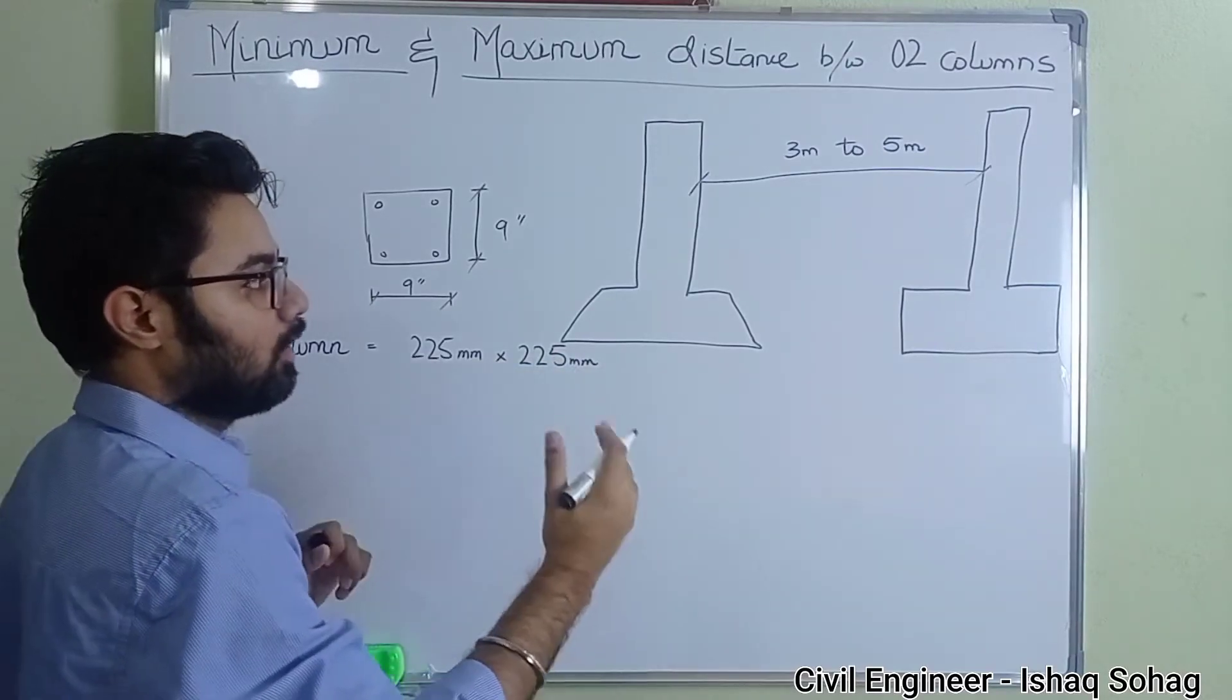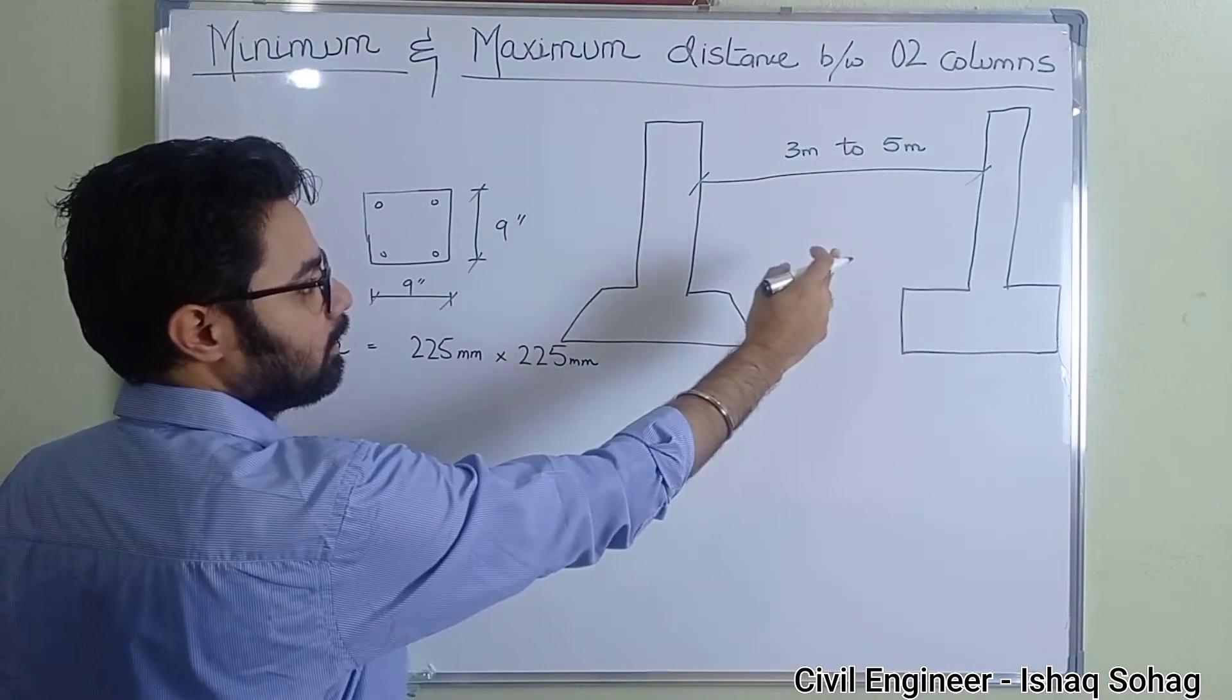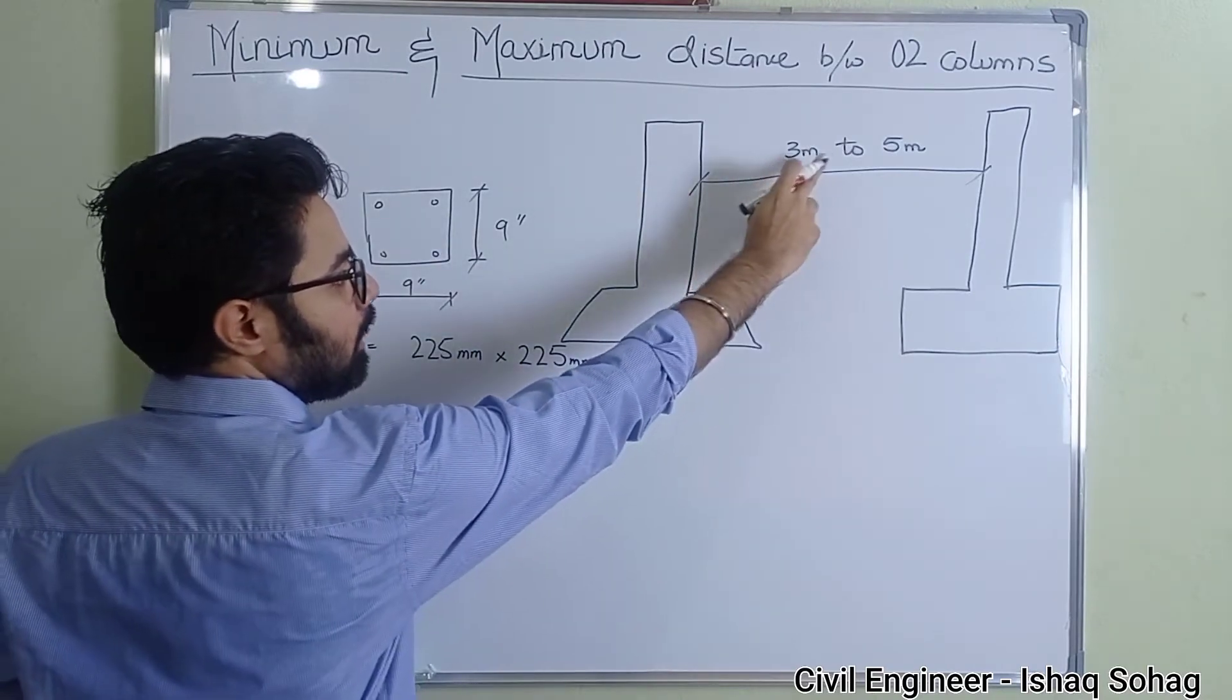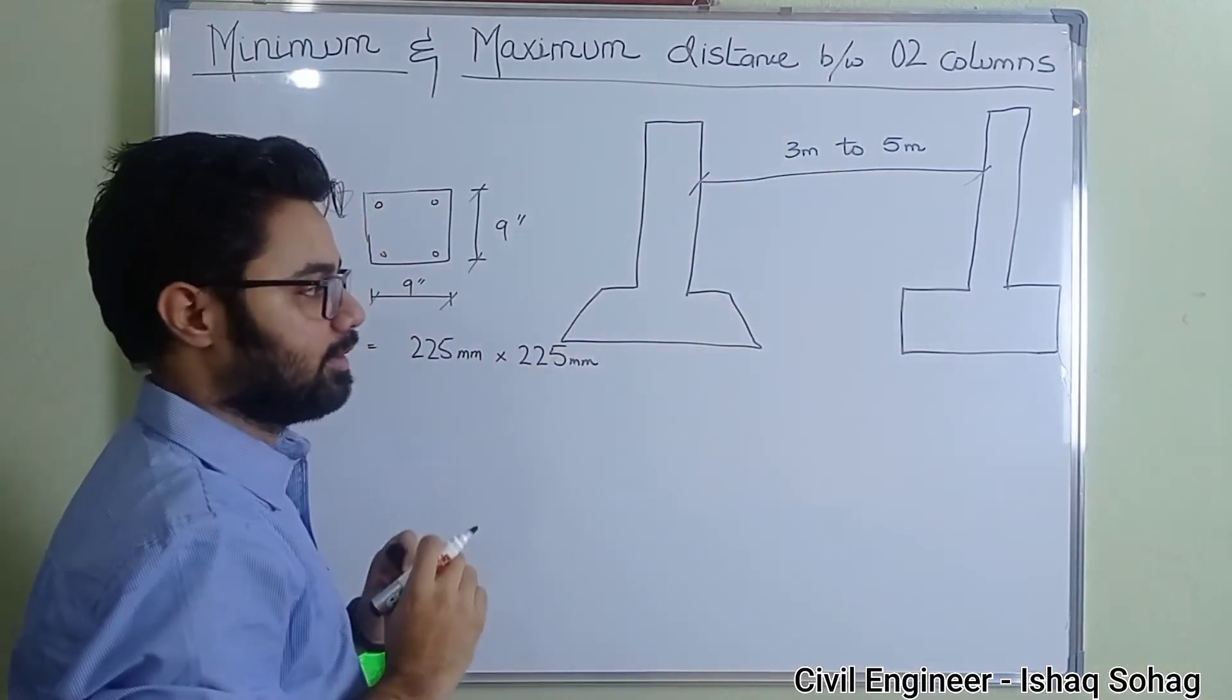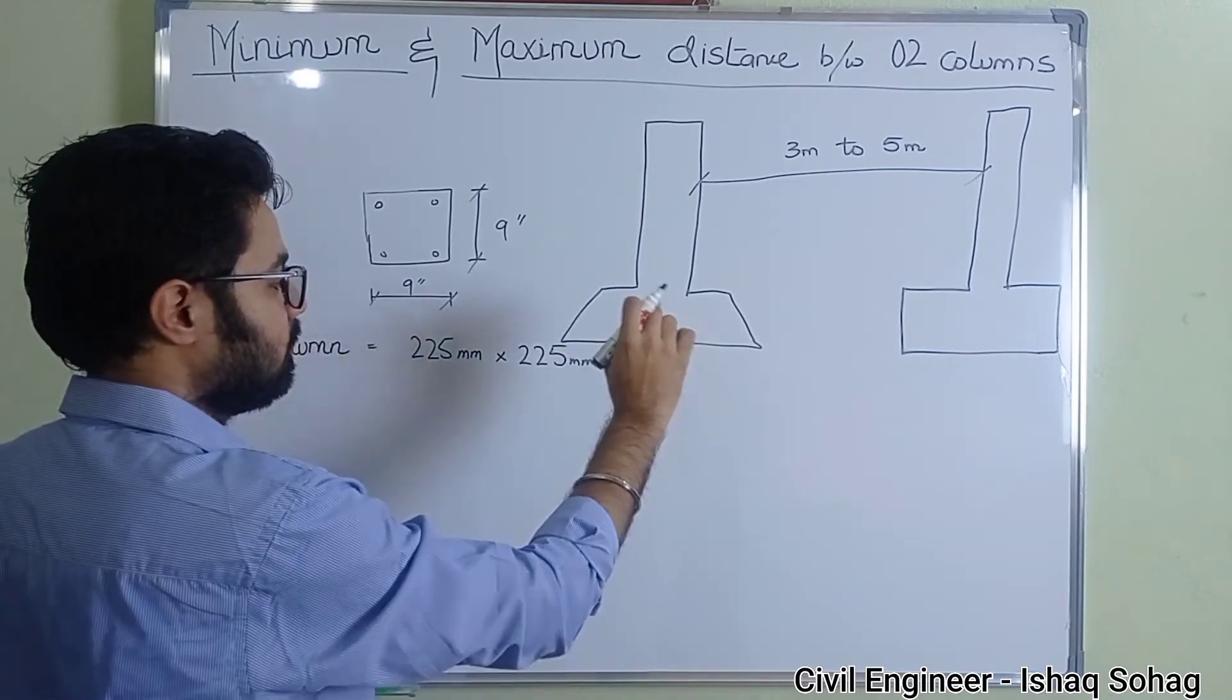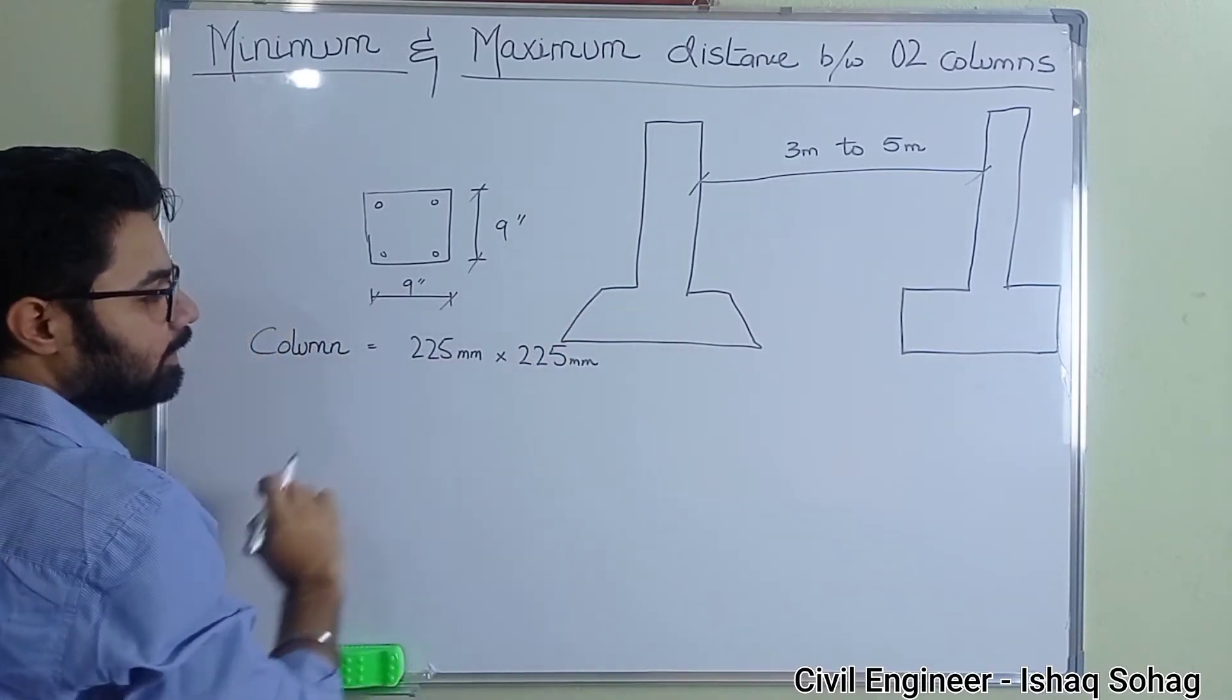So if you are designing the house, you can have a distance of three to five meter. This should be the minimum and five should be your maximum distance. For this purpose, the dimension of column is going to be nine by nine inches.